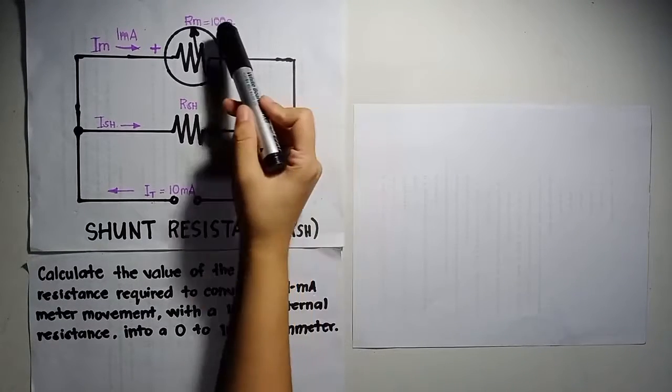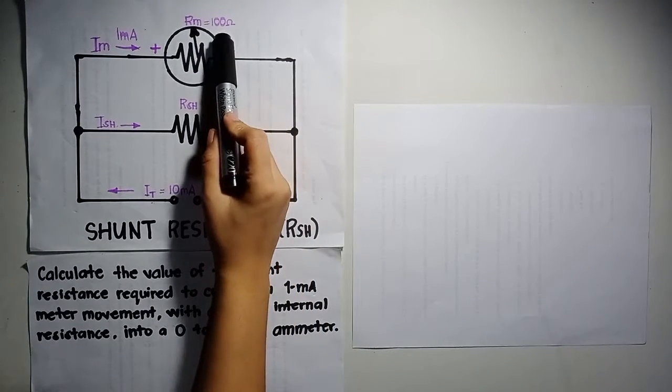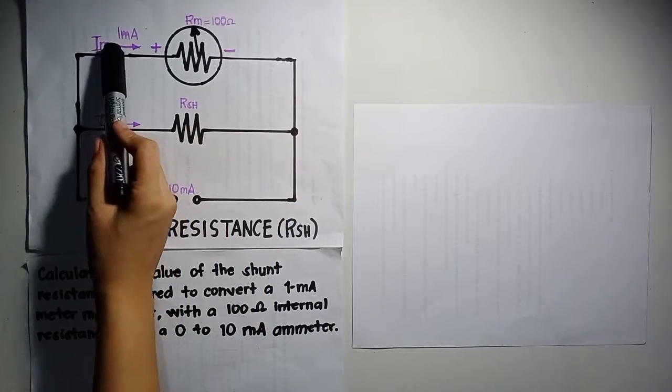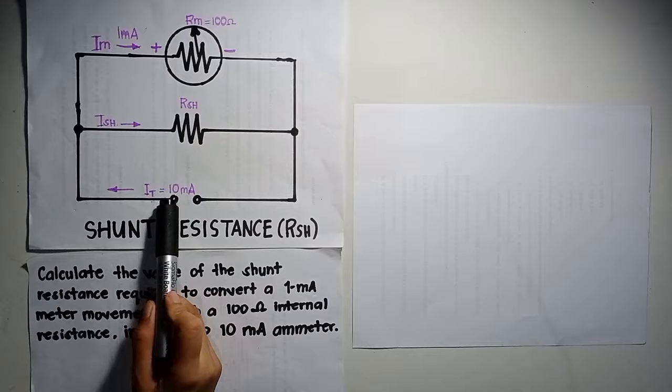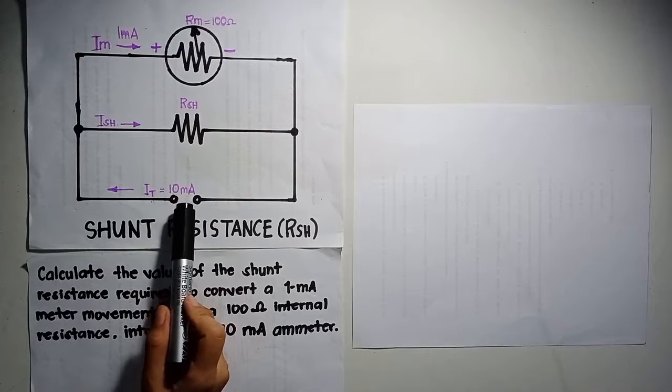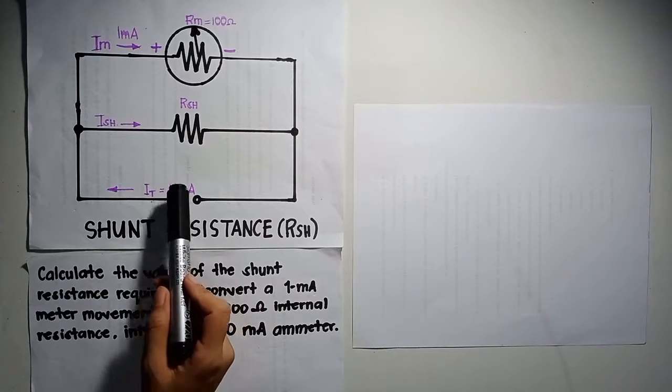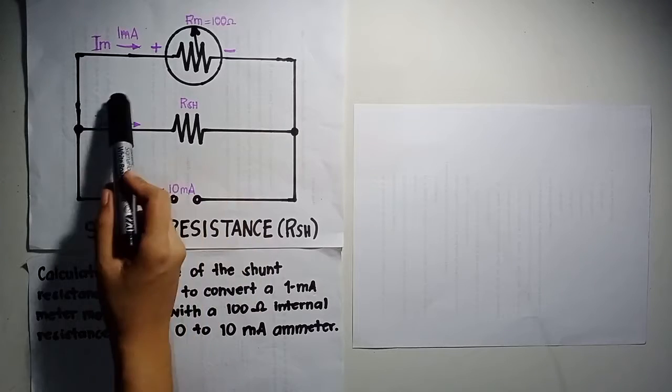Given the value of Rm, which is 100 ohms, Im equals 1 mA, and It equals 10 mA, and the required is Rsh.